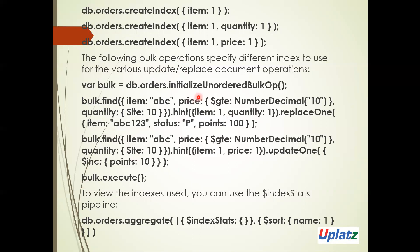I'm using an unordered bulk operation and executing to get the output. If you want to see what fields have been indexed in a collection — for example if someone else created indexes — you can use index stats via the aggregate method: db.collectionName.aggregate([{$indexStats:{}},{$sort:{name:1}}]). This lets you view what fields have been indexed.